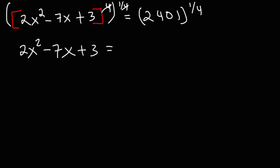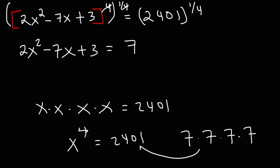Now on the right side, we need to find the fourth root of 2,401. So what number multiplied 4 times is equal to 2,401? If you don't know what this is, just type it into your scientific calculator. Type in 2,401 raised to the 1 over 4 and you should get 7. 7 to the fourth power is 2,401. If you multiply four sevens together, you're going to get this number.